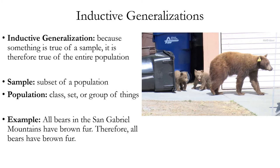As a reminder, the word 'population,' even though it comes from a Latin word meaning people, does not refer only to groups of people — a statistical population is any group of things, such as the population of atoms in the universe. An example: all bears in the San Gabriel Mountains have brown fur; therefore, all bears have brown fur. We might have dozens, hundreds, or thousands of bears examined, so this might avoid hasty generalization. But if the sample is biased — not representative of the whole population — it could still be a fallacy. Our sample is biased because we're only looking at bears in one part of the world, ignoring bears elsewhere with different fur colors, such as polar bears in the Arctic.